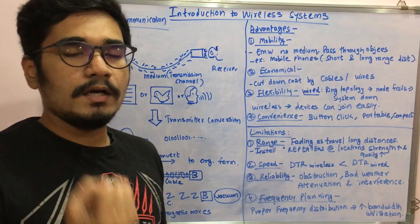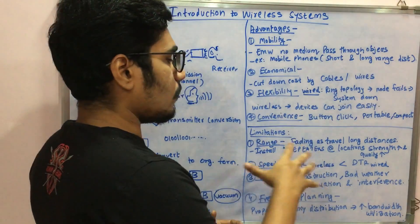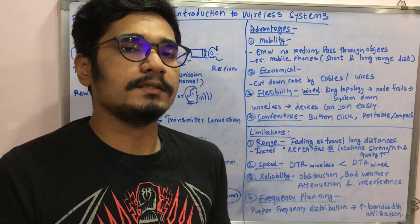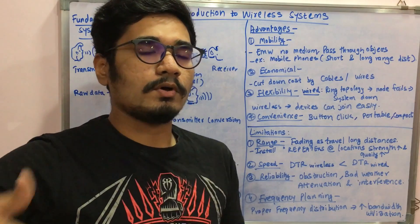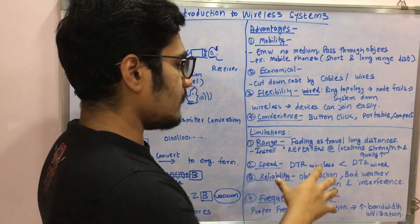Next is the reliability factor. Obstruction, since it passes through objects, obstruction would be there and so the speed considerably reduces if there is bad weather going outside, in some monsoon, or due to some other factors. The reliability of that network gets compromised and the attenuation, diffraction, and interference due to the other nearby vicinity signals.